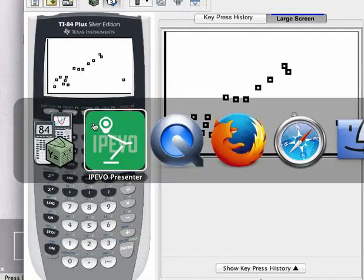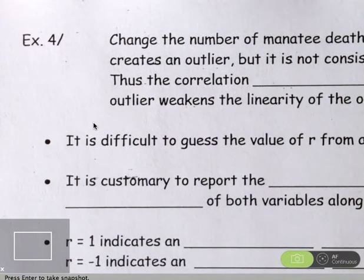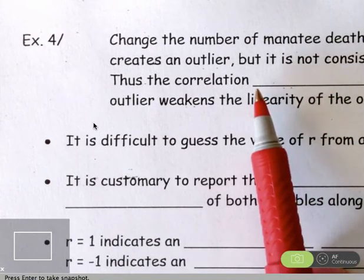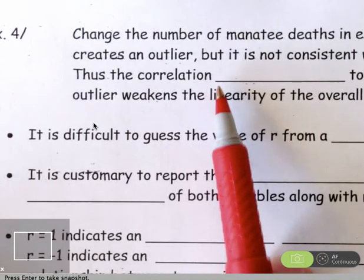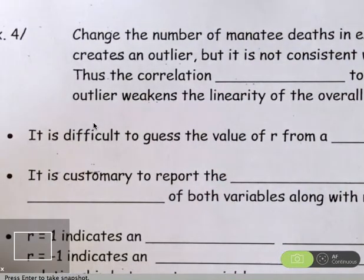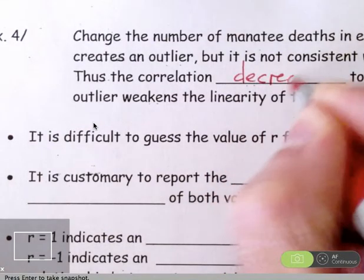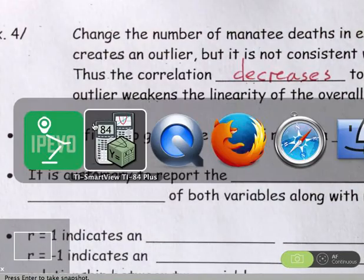the linear pattern that we had seen in the scatter plot. So, in this case, we've created another outlier, but it is not consistent with the linear pattern. Thus, the correlation, you would expect it to decrease. But you might be surprised how much it decreases. So, the correlation decreases. And let's go calculate it.